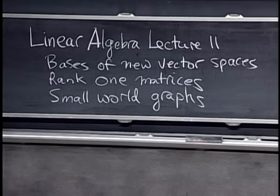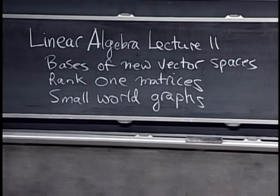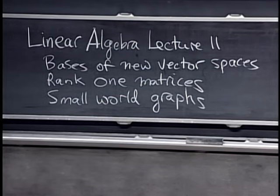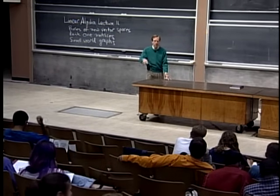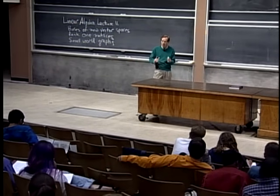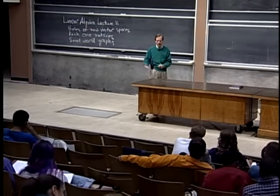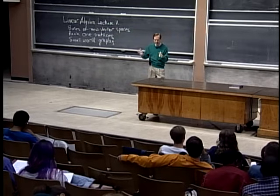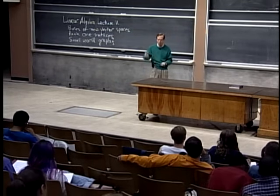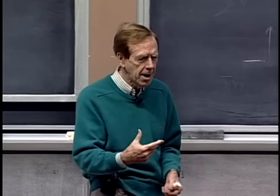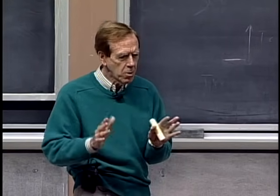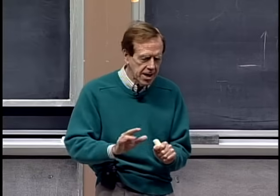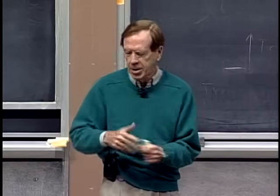This is Linear Algebra, Lecture 11. At the end of Lecture 10, I was talking about some vector spaces where the things in those vector spaces were not what we usually call vectors. Nevertheless, you could add them and you could multiply by numbers, so we can call them vectors. The example I was working with — they were matrices. The same ideas work as long as you can add and multiply by scalars.